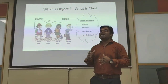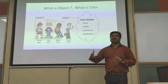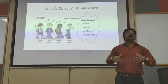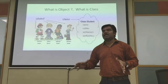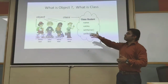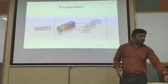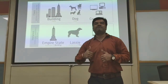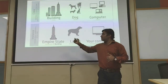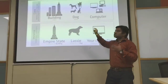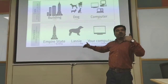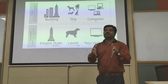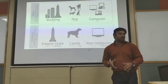What is an object? An object is an instantiation of a class. Instantiation means you copy the properties of a class into the object and then make use of it in your program. You can create multiple objects for a single class. For example: if a building is a class, then the Empire State Building is an object. If 'dog' is a class, then Lassie is an object. If 'computer' is a class, then your personal laptop in front of you is an object.